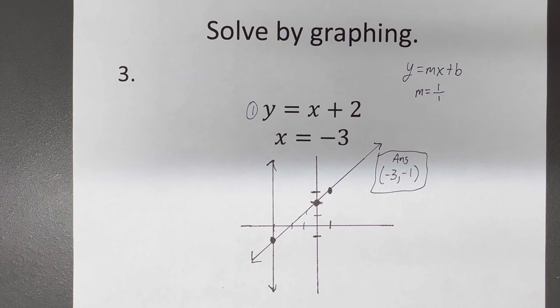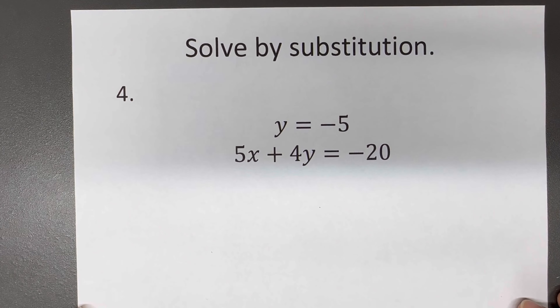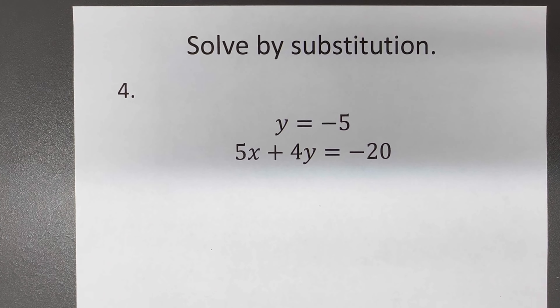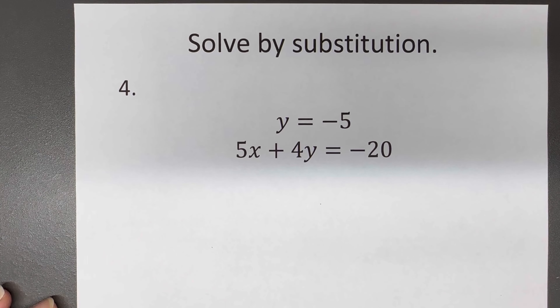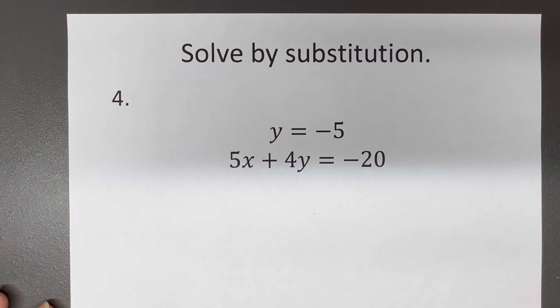That's solving by graphing. Now we're getting into the next method — solving by substitution. Substitution is fairly straightforward; all you really have to do is substitute. We're going to start off with a simple problem. It says Y equals negative five and five X plus four Y equals negative 20.